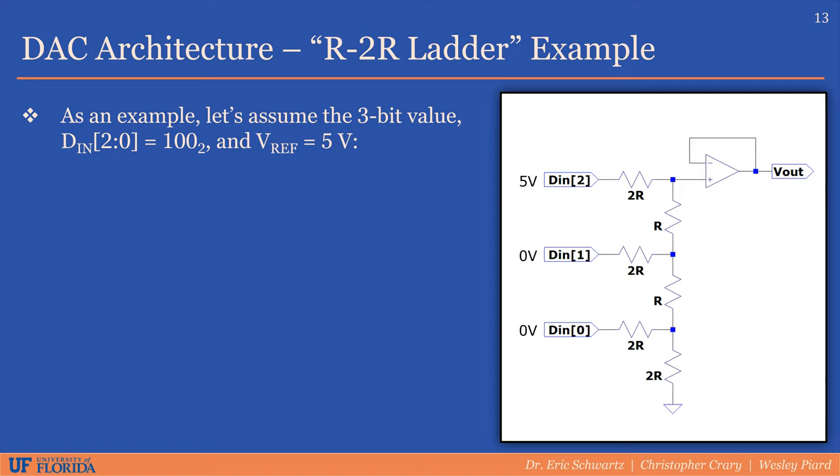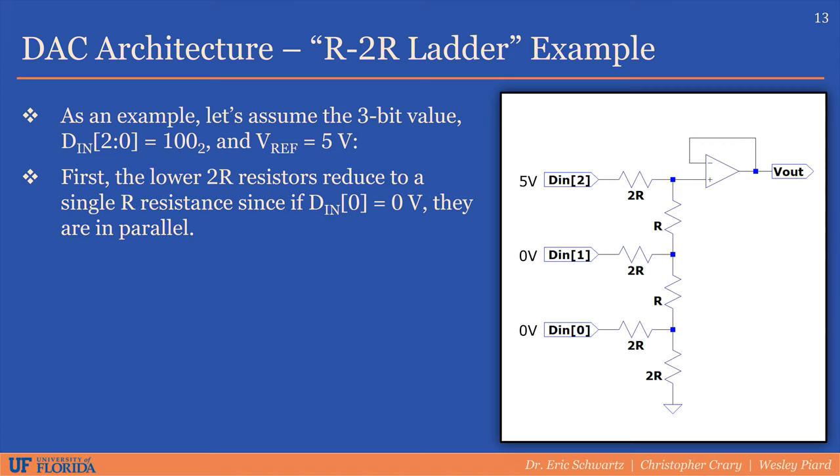As an example, let's try to calculate the voltage output of a 3-bit R2R ladder DAC, assuming we have a 5-volt reference and we input a digital value of binary 100. In this case, because the least significant bit is 0 volts, or ground, we have two 2R resistances that are in parallel, which result in a single R resistance. This resistance then combines in series with the R resistor above it, resulting in a 2R resistance.